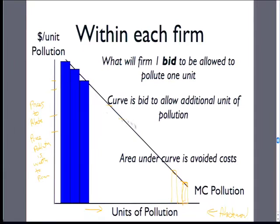There are different prices along this marginal cost of pollution. One way to think about it is that pollution itself is an input into the firm's production. Another way is that if they had to clean up, they would reduce their profits. So if they're allowed to pollute a whole bunch, the cost can be really low. If we set a price of pollution that's really low, this is how much the firm will pollute. If we set a price that's super high, the firm's going to abate a whole bunch and only pollute a little.